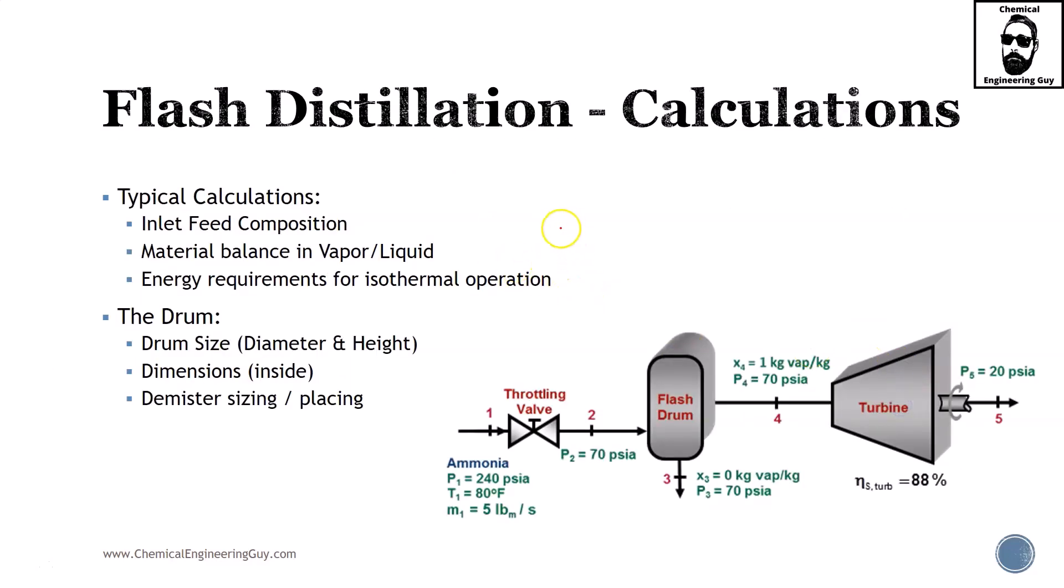Let's talk about the calculations. What would you typically be doing whenever you are in charge of designing or operating a flash drum or controlling a flash drum? The typical calculation will be: what is the inlet feed composition, what are your vapor requirements, how much amount and how pure vapor you require, the bottoms, the equilibrium interactions, overall the material balances, and also energy requirements. So if you're talking about isothermal operation or maybe adiabatic operation, if you're going to be cooling it or heating it, if you're going to be changing pressure here or not, well that's all the type of calculations you will be required.